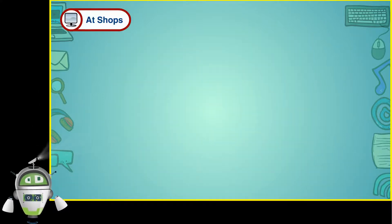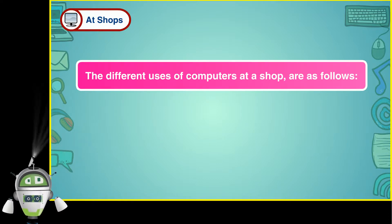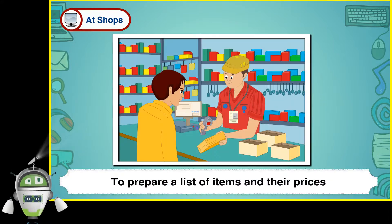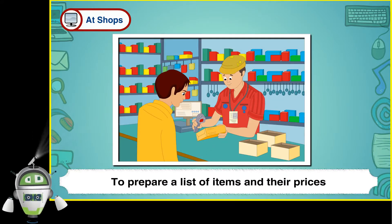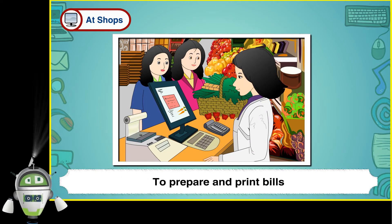At shops, the different uses of computers are as follows: to prepare a list of items and their prices, and to prepare and print bills.